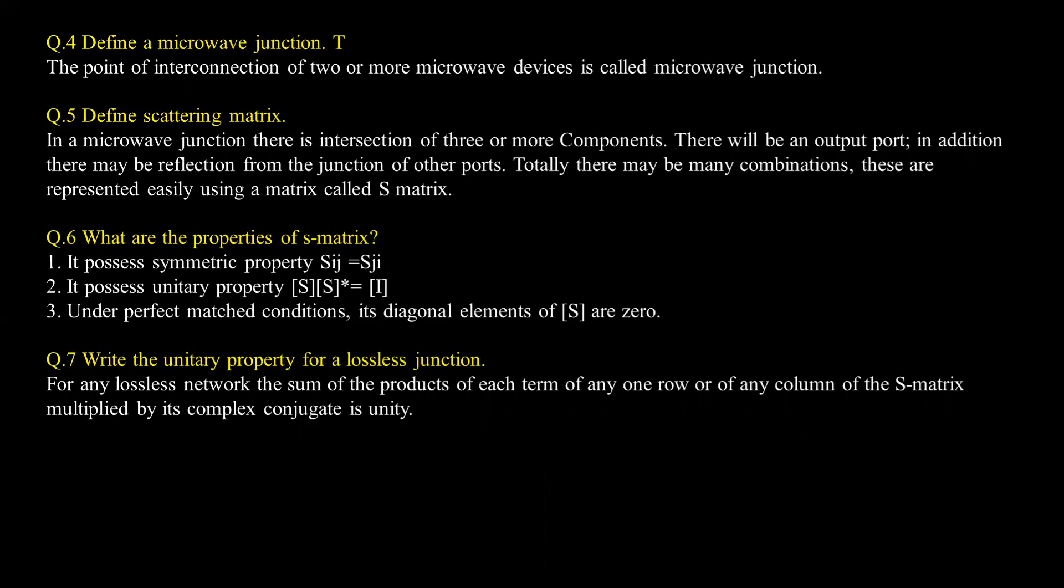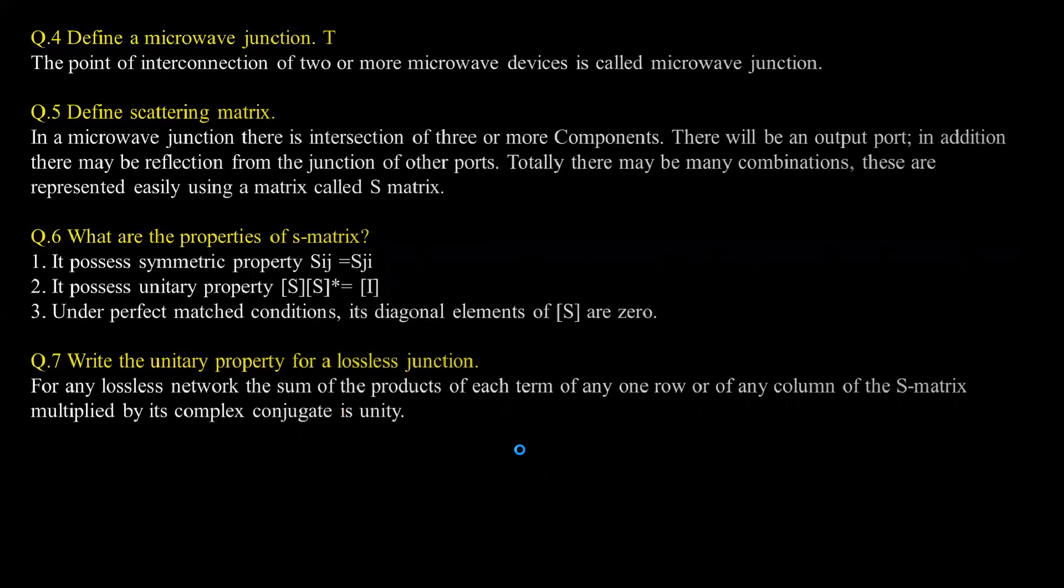What are the properties of the S-matrix? There are three properties of the S-matrix. Next question: Write the unitary property for a lossless junction or any lossless network. The sum of the product of each term of any one row or any column of this matrix multiplied by its complex conjugate is unity.